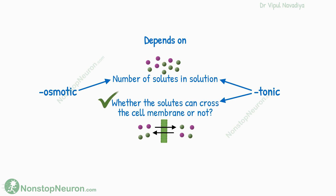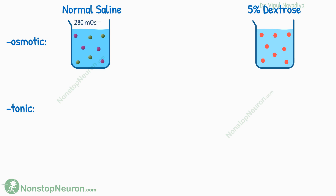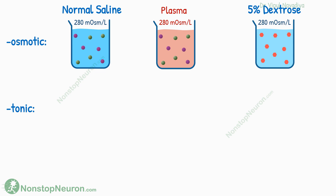To understand why the permeability of the cell membrane is important, we will take examples of normal saline and 5% dextrose. They both have an osmolarity of about 280 milliosmoles per litre, and the osmolarity of intracellular fluid is also about the same. Thus, in terms of osmolarity, they both are isoosmotic to the cell.